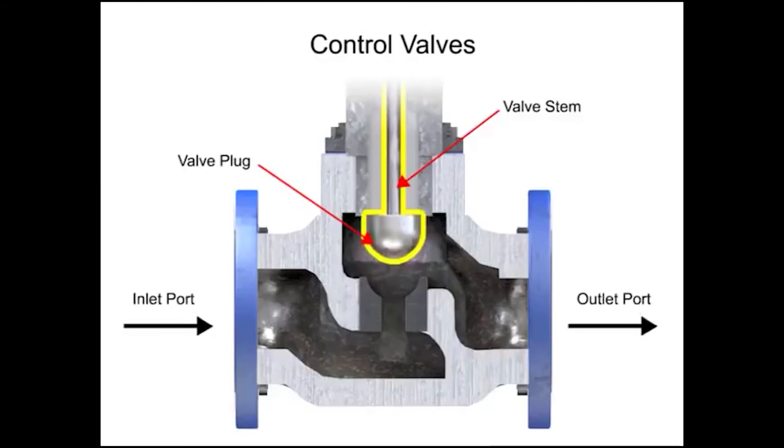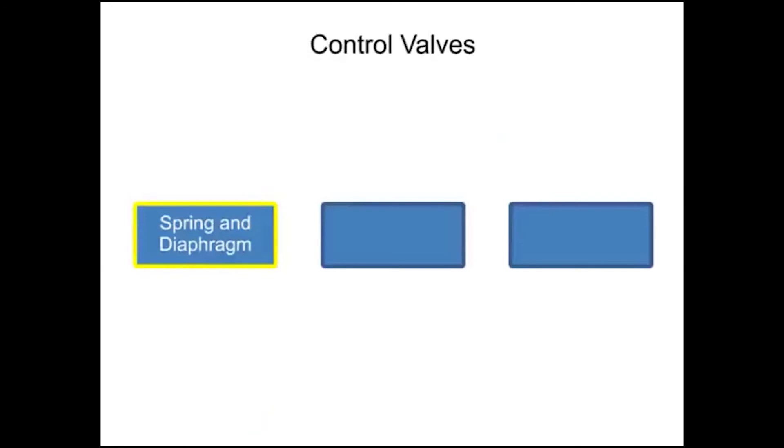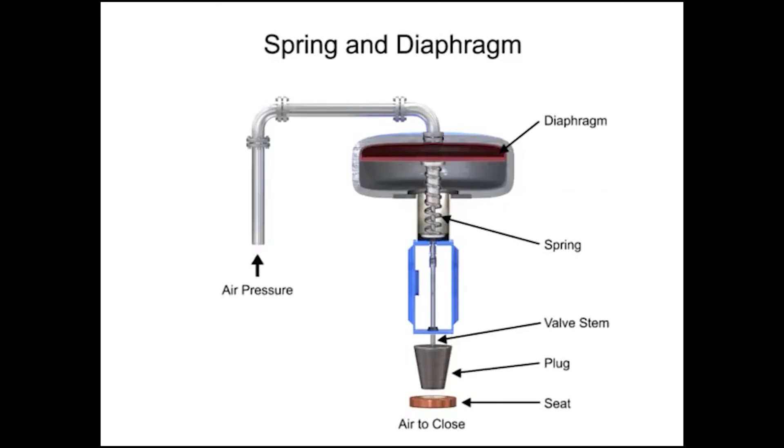Three actuator types are used in control valves and they include spring and diaphragm, solenoid, and motor. As the name suggests, the spring and diaphragm actuator uses a spring and a diaphragm to move the valve stem and plug.